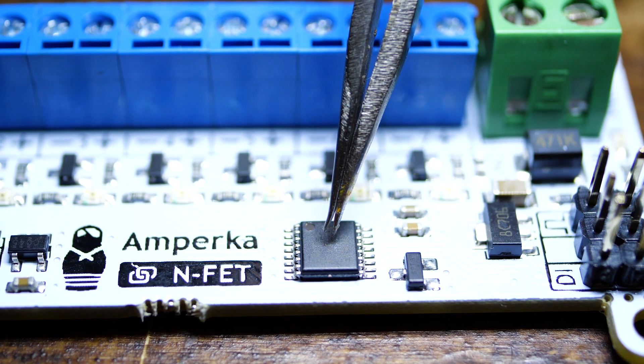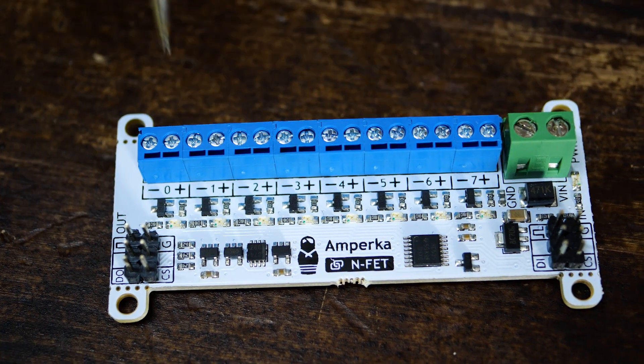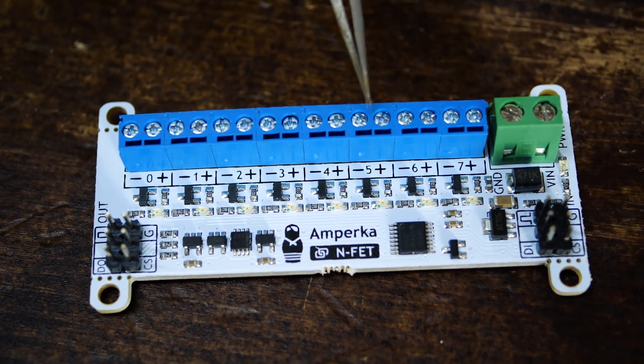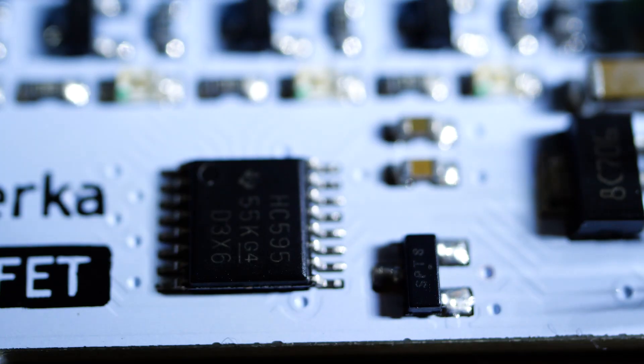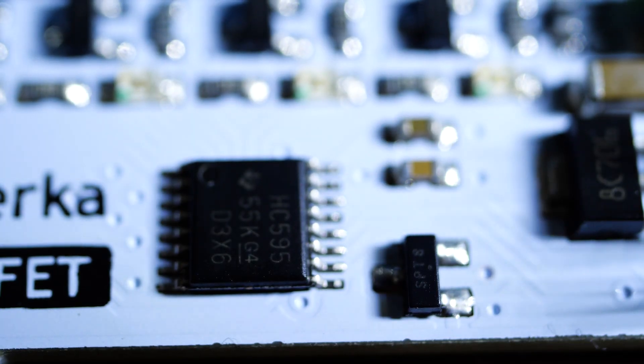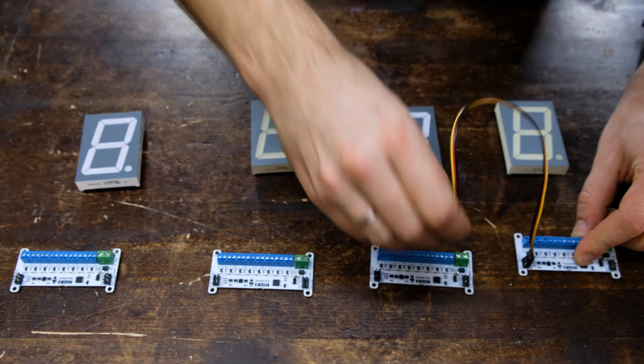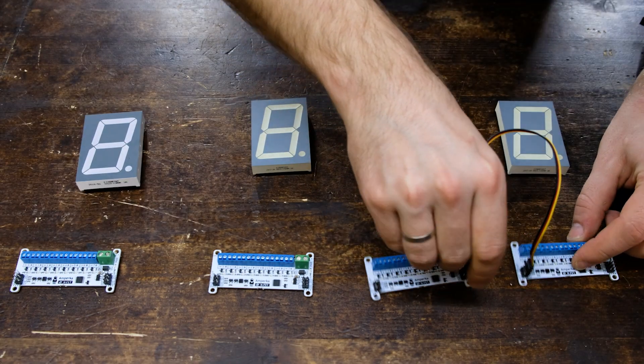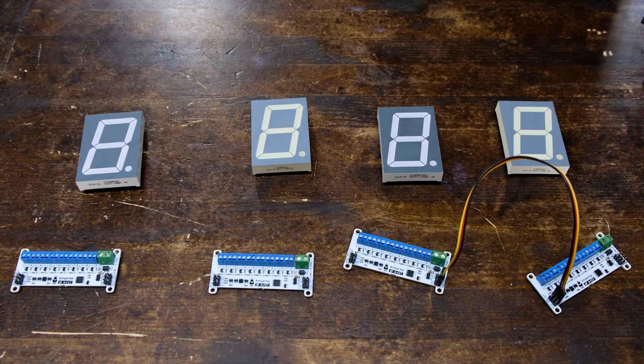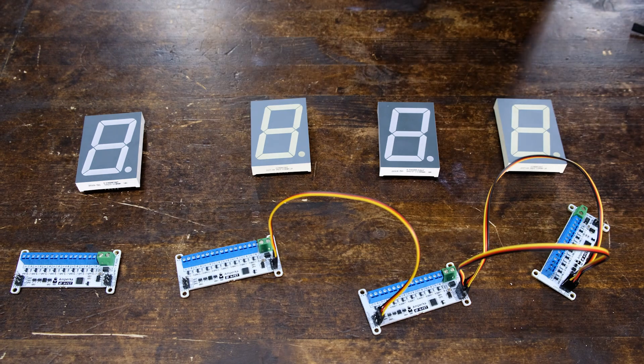This chip is called a shift register. It directs the current to one of 8 outputs. Here they are, blue ones. This way I can direct the current to any segments of 7 segments. I have 4 of them, so I daisy chain 4 models like railway cars. I'll connect them like this.